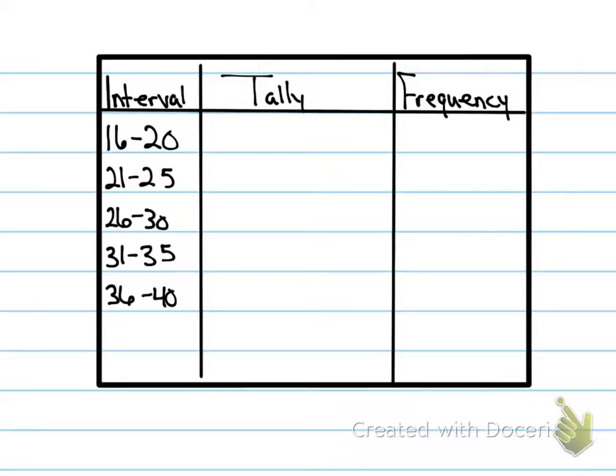How many numbers fell in the interval of 16 to 20? Two. Very good. What about 21 to 25? Four. Did you get four, Mackenzie? Yes. Okay. Are you all done? Xander, are you done? No, not yet? Alexis, you're still working? I'm done. Okay.